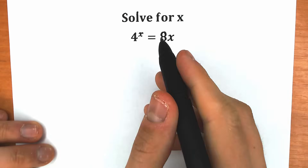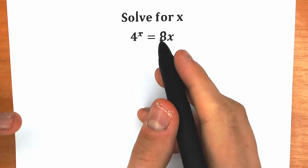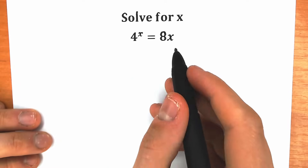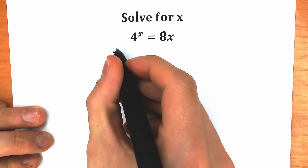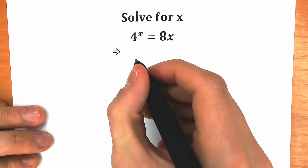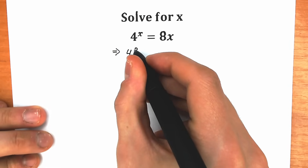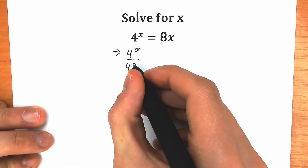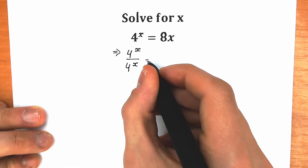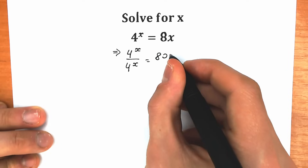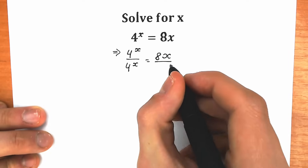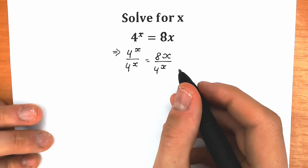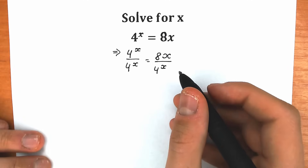So first of all, how can we solve this question? There are a lot of ways, but I'm going to show you this one. Let's divide both sides by 4 to the power x. So on the left side we have 4 to the x divided by 4 to the x, and on the right side we have 8x divided by 4 to the power x. We just divide both sides by 4 to the power x.